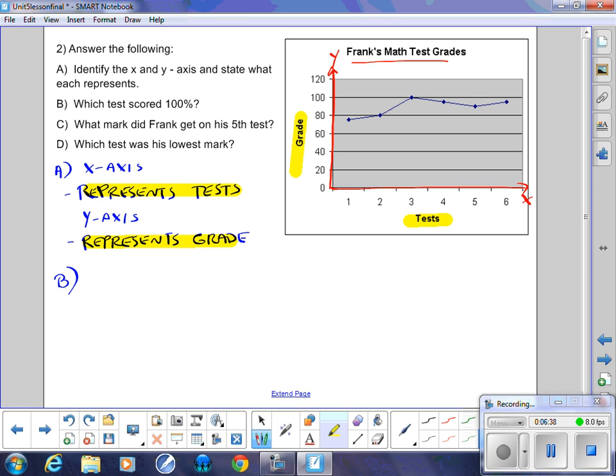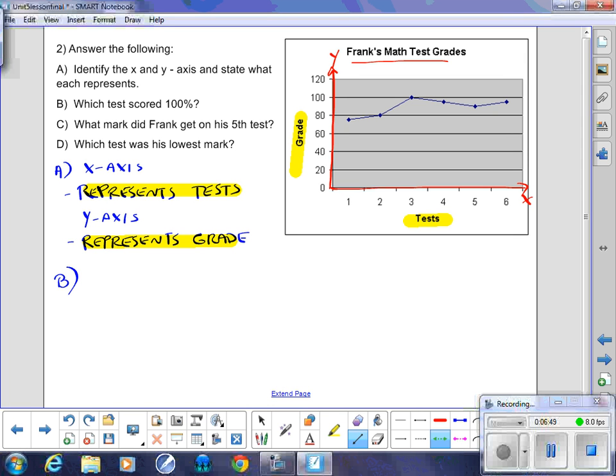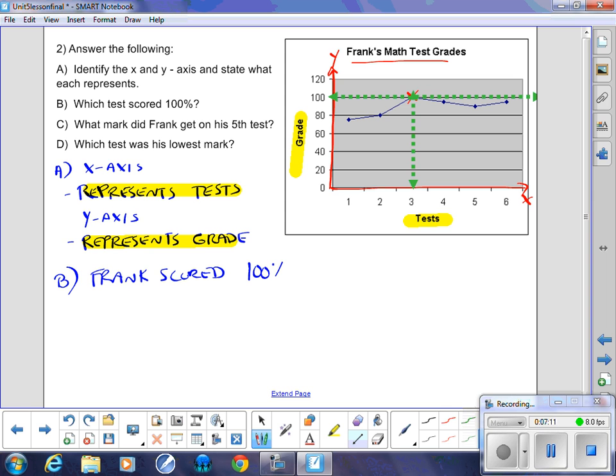B part. Which test scored 100%? So again, the process is, you look for the 100%. So that 100% is right here on the Y axes. We're going to draw a line across. So we'll go across the 100%. And when I look at Frank's results, there's only one test that corresponds, and that's that one right there. So now I've got to kind of look straight down and see what test was it. It was test number three. So Frank scored 100% on test number three.